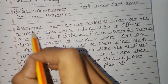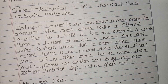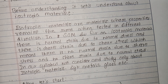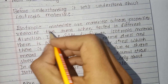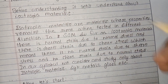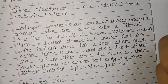Isotropic materials are materials whose properties remain the same when tested in different directions. In strength of material, for an isotropic material there is no shear due to normal stress. The property is the same throughout the material.